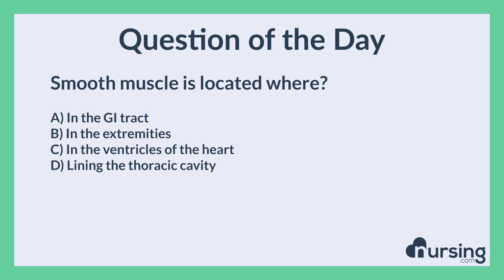The correct answer is A, in the GI tract. Smooth muscle is located in the GI tract, blood vessels, respiratory tract, and reproductive tract.